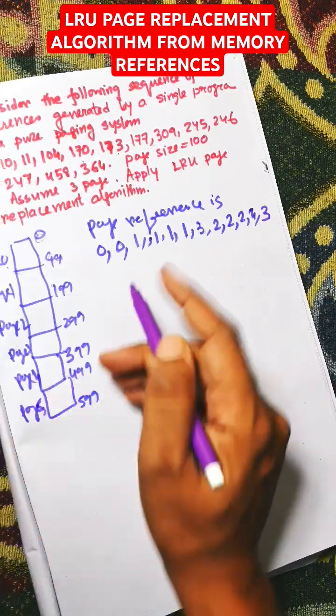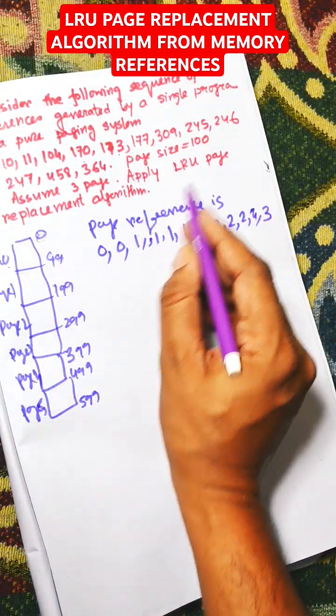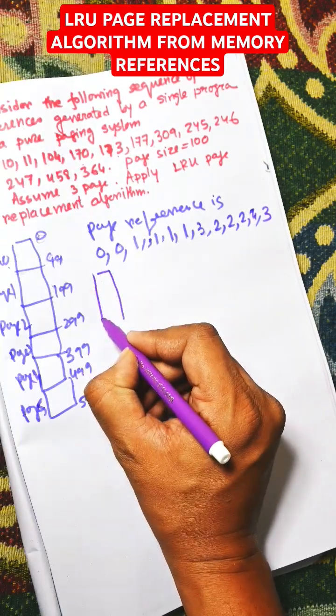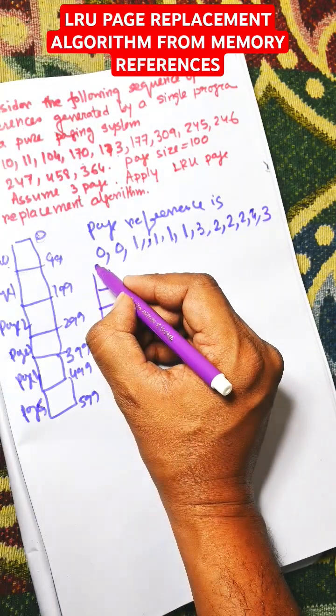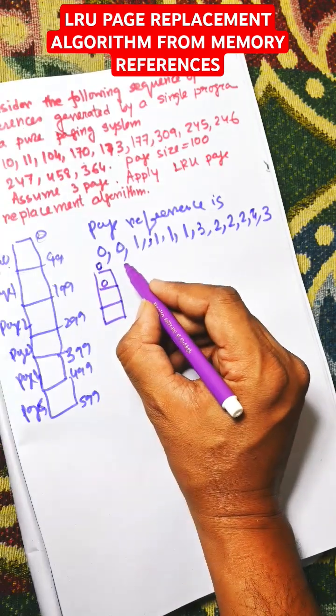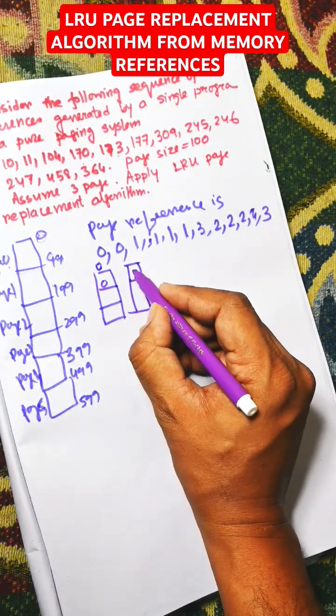Now we need to draw the page frame for LRU with 3 frames. First of all, 0 is there, so 0 will be loaded here. Next 0, this is a hit.